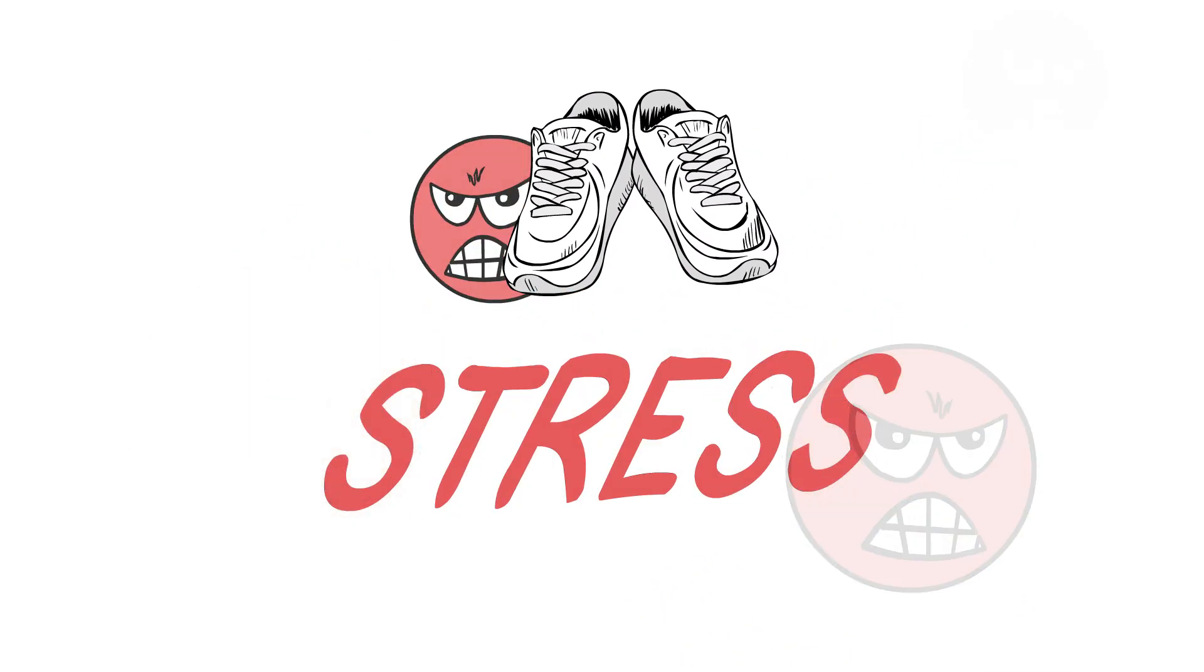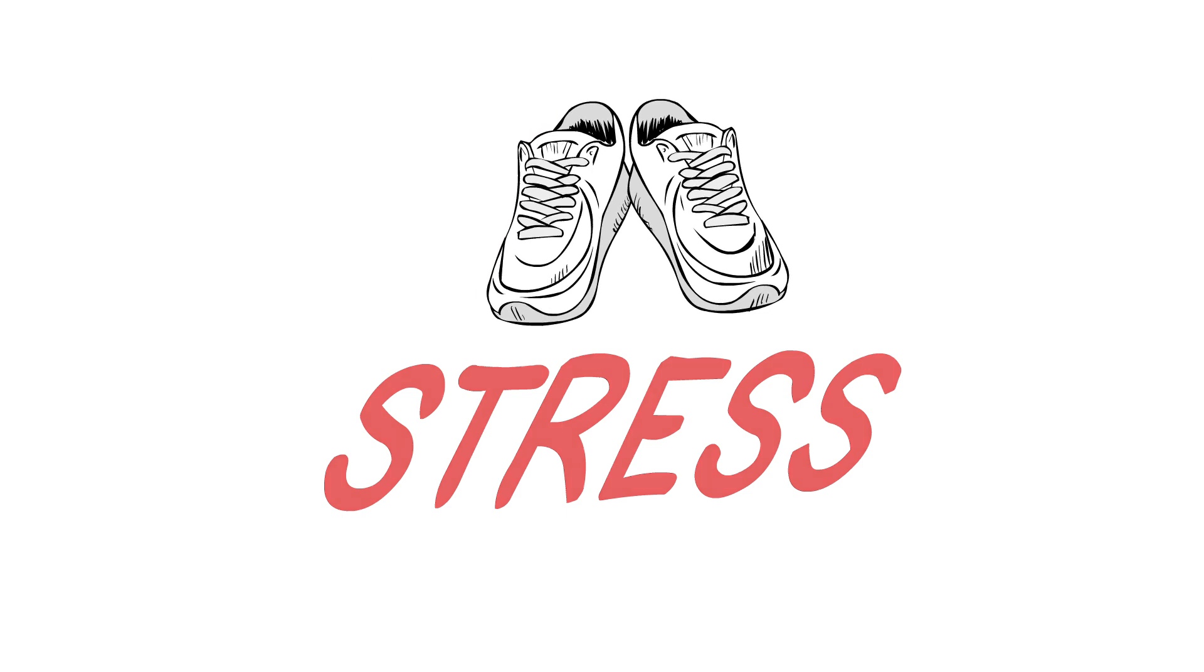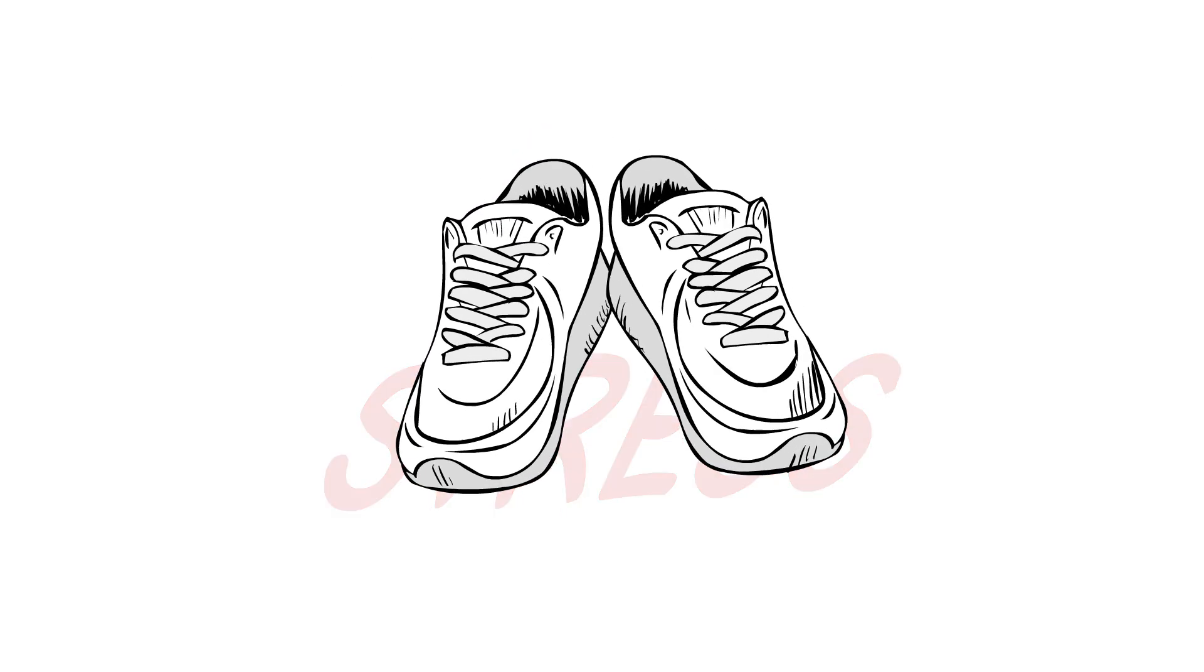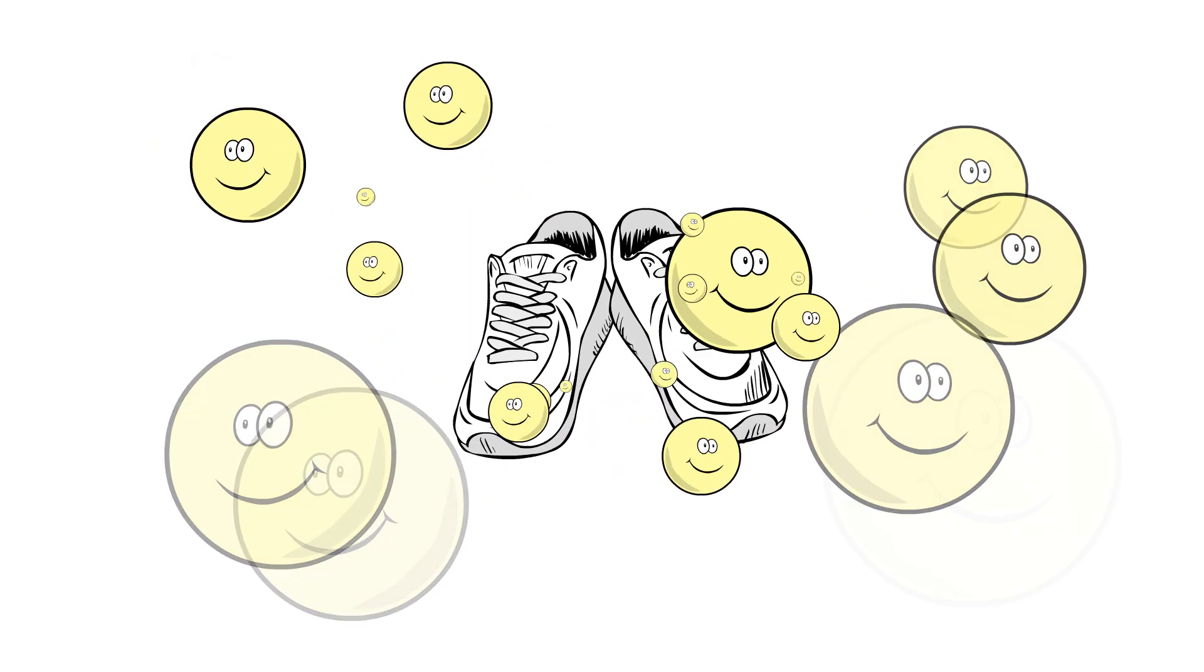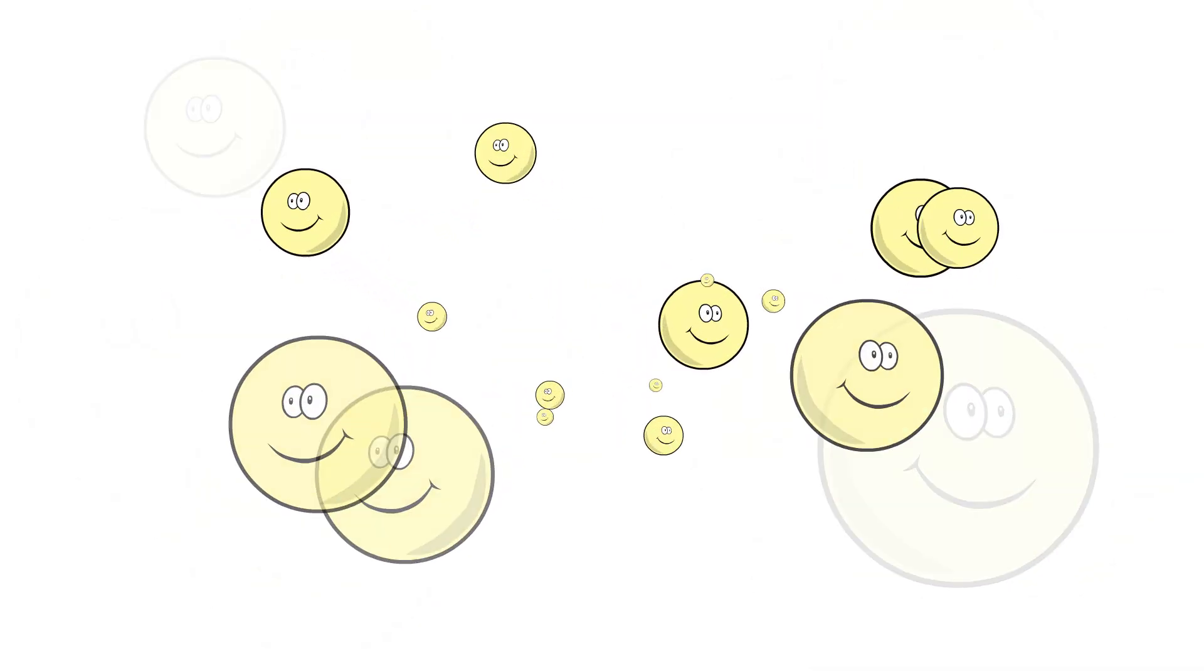So, chemically, exercise reduces the level of the body's stress hormones, such as adrenaline and cortisol. It also stimulates the production of endorphins, chemicals in the brain that reduce pain and elevate mood.